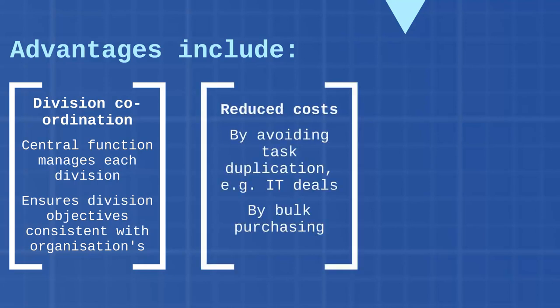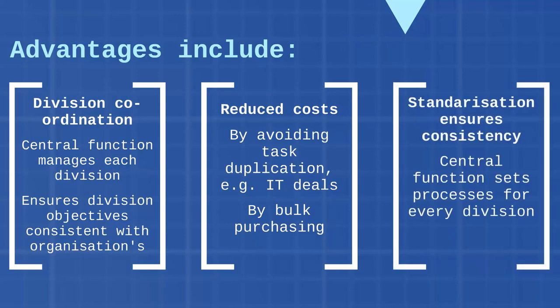The next advantage is reduced costs. A disadvantage of divisions acting independently is that there could be duplication of tasks. By using centralization, the central organization is aware of what the different divisions are doing and can make sure there's no duplication of tasks. For example, the centralized organization can bulk purchase — they might negotiate deals for IT for the organization as a whole, rather than separate divisions doing that and not getting such a good deal.